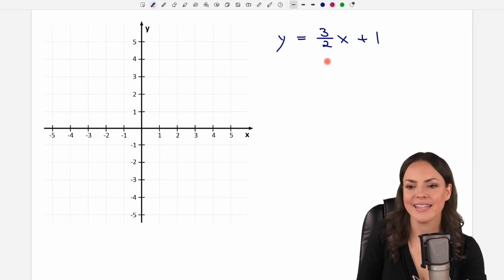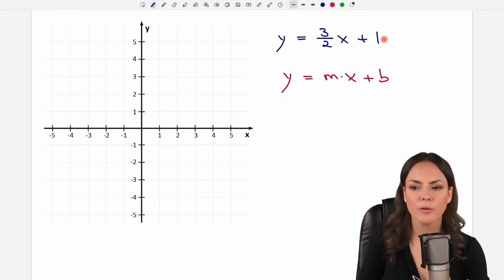We want to graph this linear function here and it is in the perfect form already because this is the slope intercept form of a linear function. So every linear function can be written in the following form: y equals m times x plus b. And if we compare these two forms now we can see in front of our x this is going to be our m. So in front of our x this number is our m, the 3 over 2, and the number that is here this is our b then.